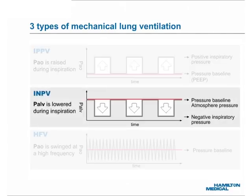The center graph shows the pressure waveform for INPV, or Intermittent Negative Pressure Ventilation. Using this principle, a negative alveolar pressure, or PALV, is applied below the pressure baseline. The negative PALV sucks air into the lungs. The baseline is usually local atmospheric pressure.